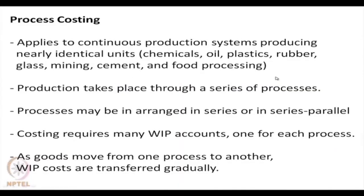What we mean by process costing: it applies to continuous production systems producing identical or nearly identical units. Examples are plenty — chemicals, oil, plastics, rubber, glass, mining, cement and food processing. In such systems, production takes place through a series of processes. Processes are usually arranged in series, but in some cases they may also be arranged in parallel configurations, and later assembled together in a serial fashion.